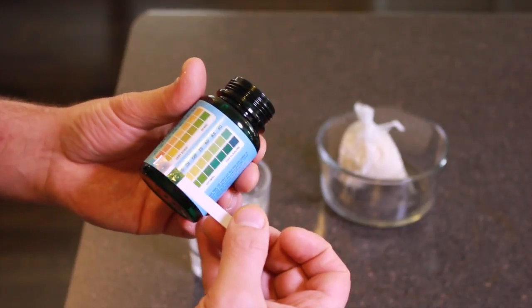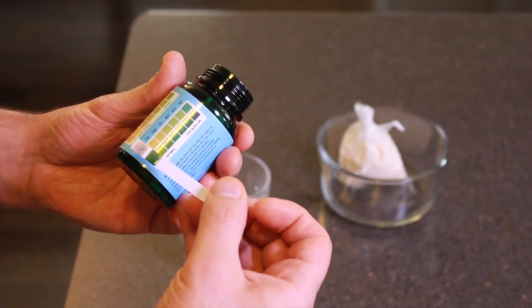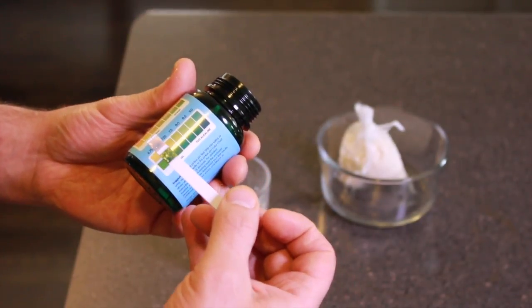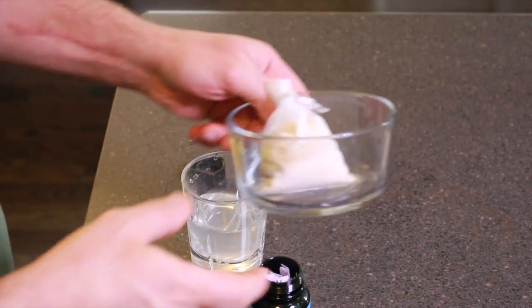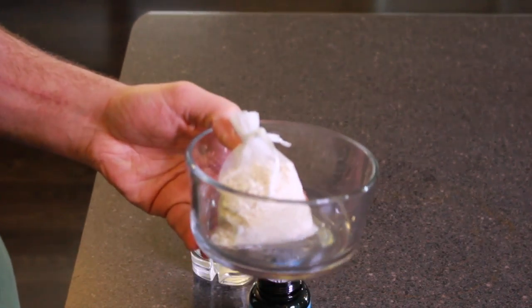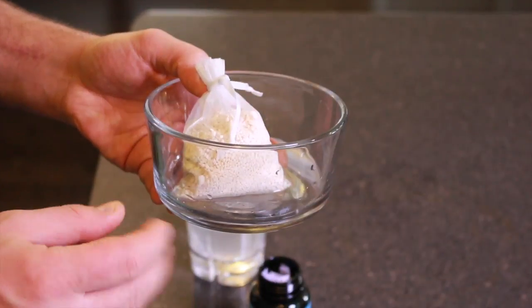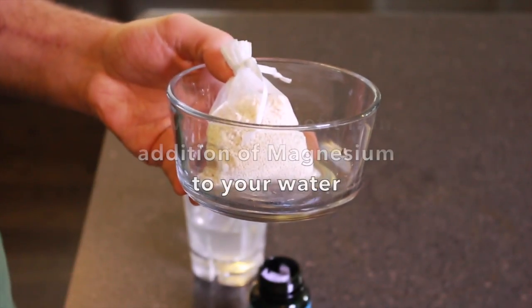So previously, as you remember, we measured at 5.75. Now we're 7 on the pH scale, which is great. I have just left these prills in the water just less than an hour. So if you leave these prills into your water filter container for let's say 10 hours, 5 hours, you'll definitely get a very high pH level of water than what you previously had.